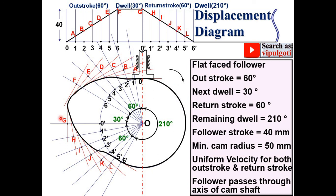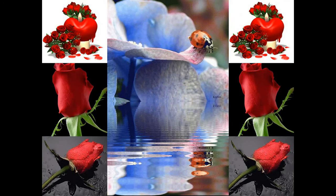So this is the cam profile. Take care in the examination: in the displacement diagram, only the final profile lines should be dark and the construction work should remain light. Similarly for the cam profile, only the cam profile itself should be dark. If you want to see more engineering videos, subscribe to my YouTube channel and go to the playlist. Thanks, dear friends — please like the video to appreciate it.